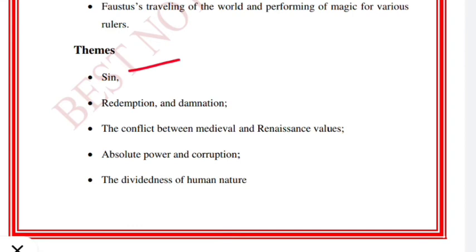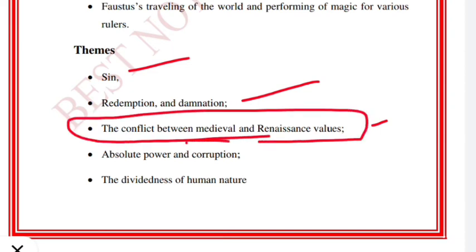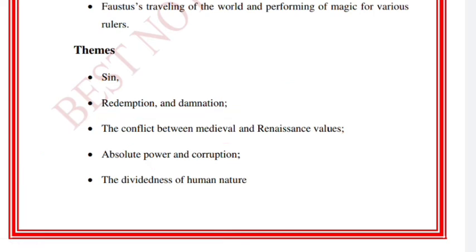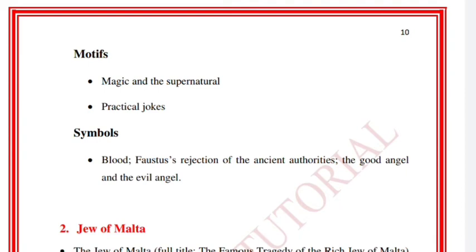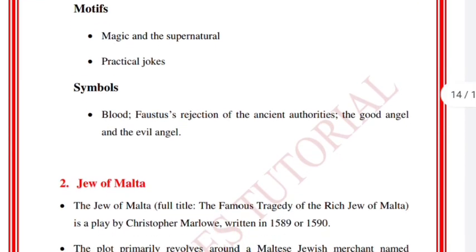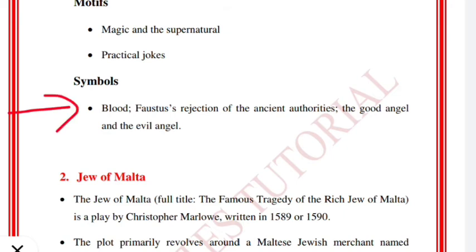The themes in Dr. Faustus are: sin, redemption, and damnation; the conflict between medieval and Renaissance values; absolute power and corruption — if someone gets absolute power, corruption begins, meaning the person himself becomes corrupt; and the dividedness of human nature. Motives include magic and supernatural motives, and practical jokes. Symbols used are: blood, Faustus's rejection of ancient authorities, and the Good Angel versus the Evil Angel.